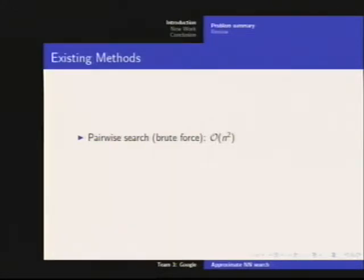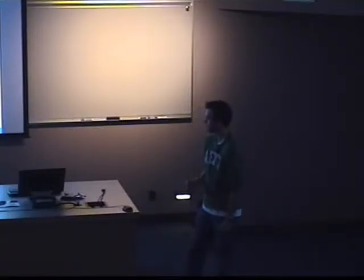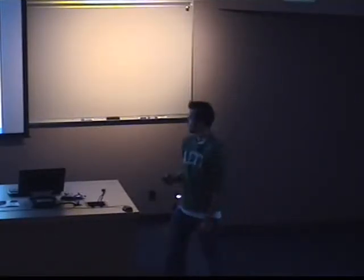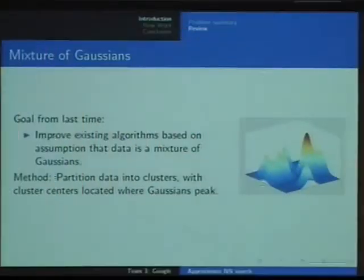So, existing methods, we have the pairwise search, which is not very interesting. Then there's trees, which are very cool, but they work in only lower dimensions. So we tried running these on our data set of 100,000 data points, and it crashes, because it doesn't have enough memory to store the tree structure. Then there's locality-sensitive hashing, in which we take our points and convert them into bit codes.